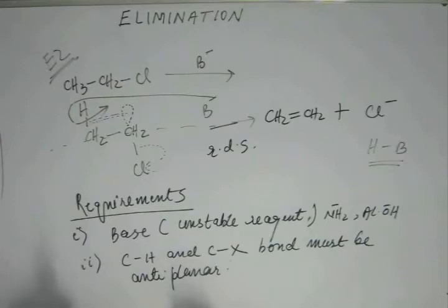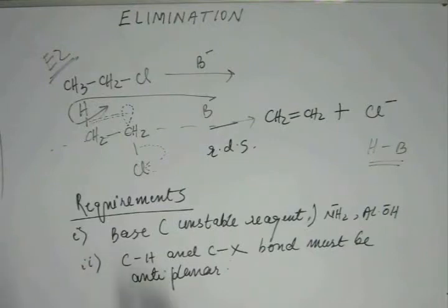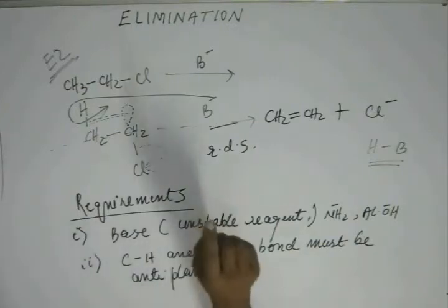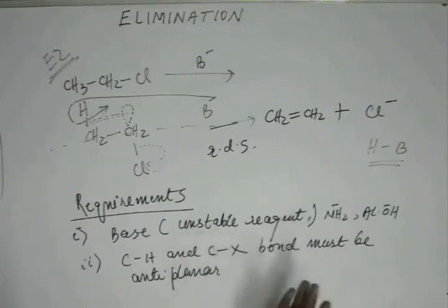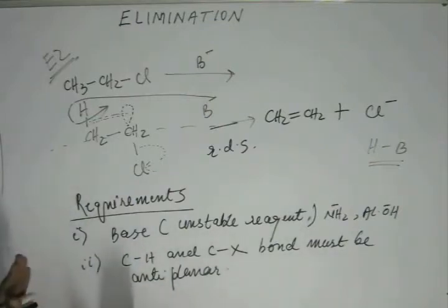There will be other factors which support the reaction. For example, base is present in the RDS, so if we increase basicity or increase the concentration of the base, that will support the reaction. In E1, which we will see henceforth, base does not appear in the RDS, so even if we increase the basicity or concentration of base, that is not going to alter the rate of the E1 reaction.